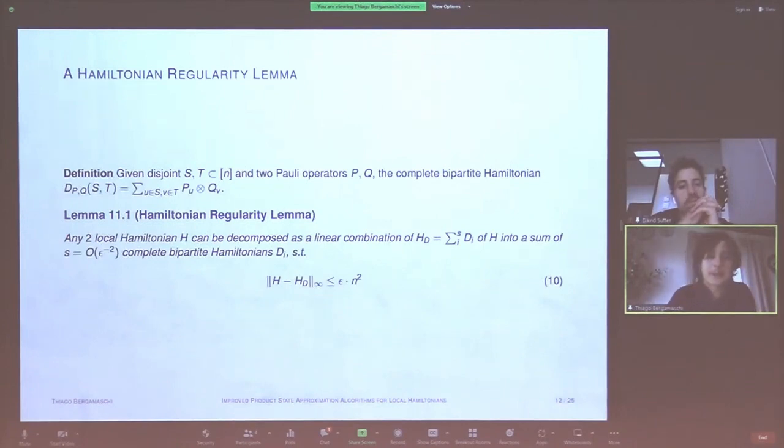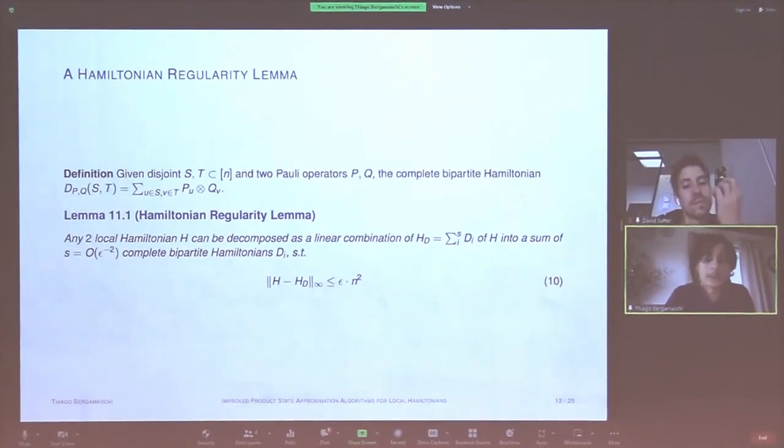So unsurprisingly, the main technical contribution in this work is a Hamiltonian version of this regularity lemma. So essentially what it stipulates again to begin by setting up some notation given two subsets of the vertices in the graph and two Pauli operators, we refer to a complete bipartite Hamiltonian as the two-local Hamiltonian which is the Pauli P on the subsets in S and the Pauli Q on the subsets in T. So our Hamiltonian regularity lemma, what it says is that any two-local Hamiltonian can be decomposed into a linear combination of these complete bipartite Hamiltonians where the error as measured in spectral norm or where the number of terms in the decomposition only depends on the desired error which now is measured in spectral norm.